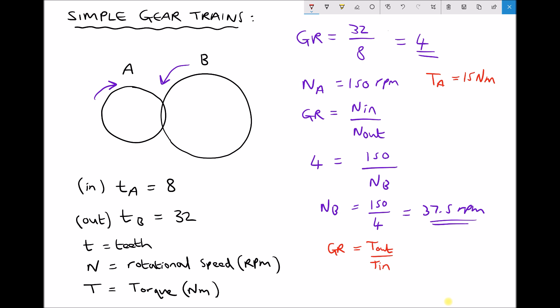If we rearrange that to make T out the subject, T out is just the gear ratio multiplied by T in. And we have all of this information. The gear ratio is 4, T in is 15, giving us an output torque of 60 Nm.